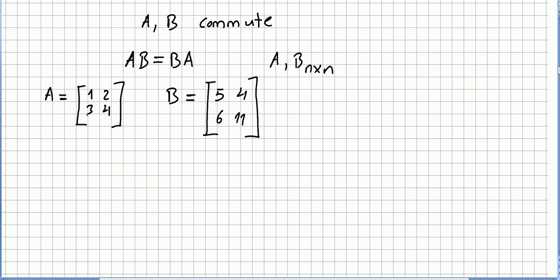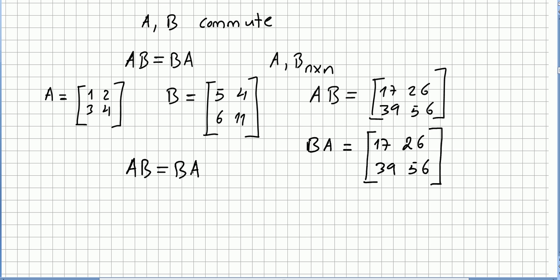If we have matrix A [1 2; 3 4] and matrix B [5 4; 6 11], let us see what is matrix A times B and let us see what is matrix B times A. So A times B will be [17, 26; 39, 56] and B times A is [17, 26; 39, 56]. So we can say that these two matrices they commute because A times B is equal to B times A.